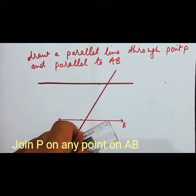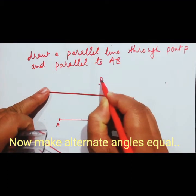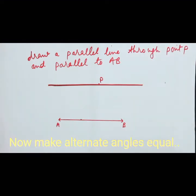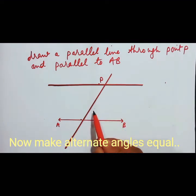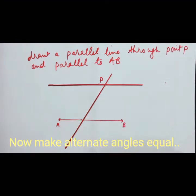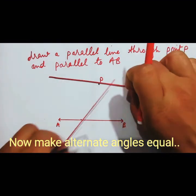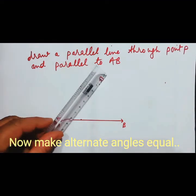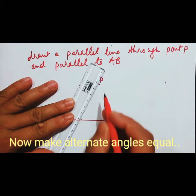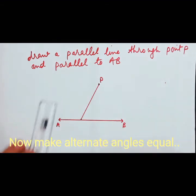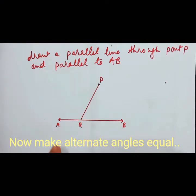If a line AB is given and a point P is given above AB, we have to draw another line which should pass through P and should be parallel to AB. Therefore, we have to make alternate angles equal. You can see here, these are the alternate angles. I will take the shorter angle. Now, how to make alternate angles equal is very important. I am going to join P to any point Q on AB.